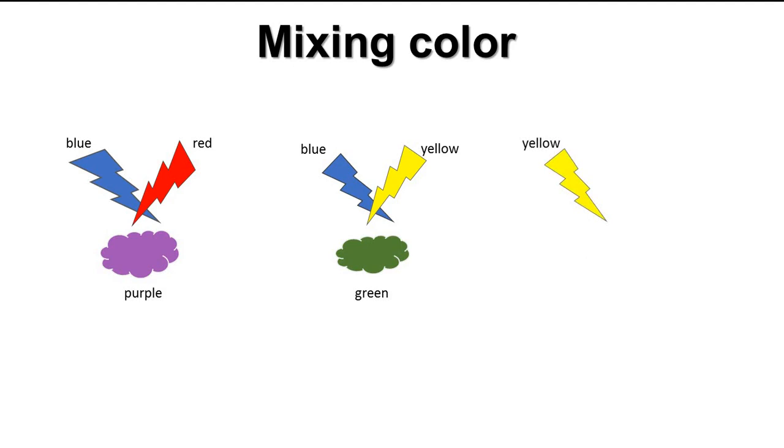But if we mix yellow with red, we got orange. So we have blue and red gives us purple, blue and yellow gives us green, yellow and red gives us orange. Purple, green, and orange we call them secondary colors.